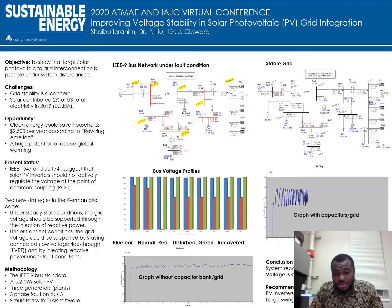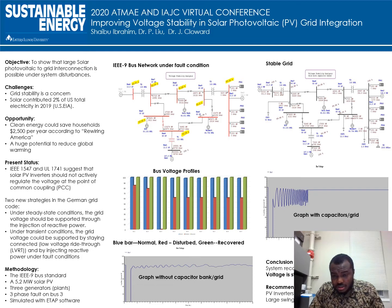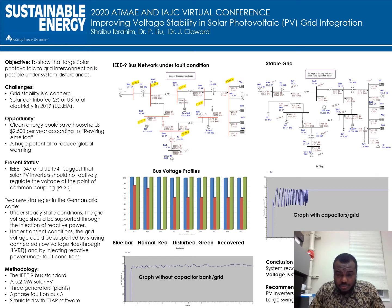This was as a result of an overloaded transmission line that hit an untrimmed tree. This resulted in a fault, and the system could not respond in the shortest possible time. The cascaded fault disturbance ran through the system and caused a total blackout.